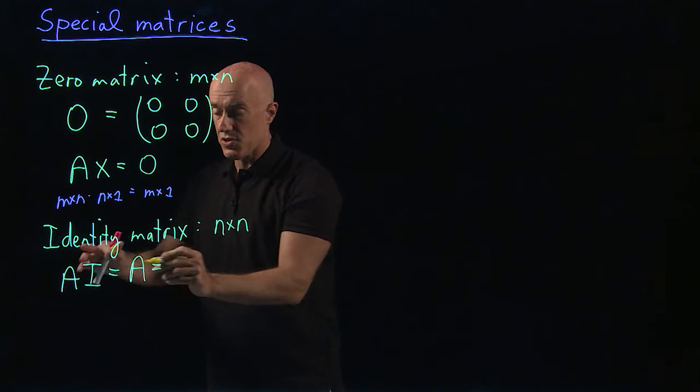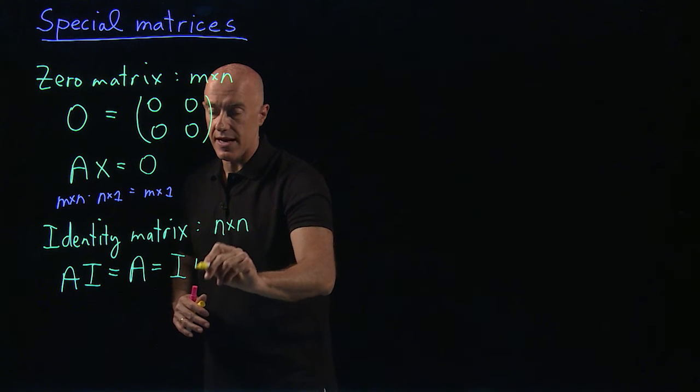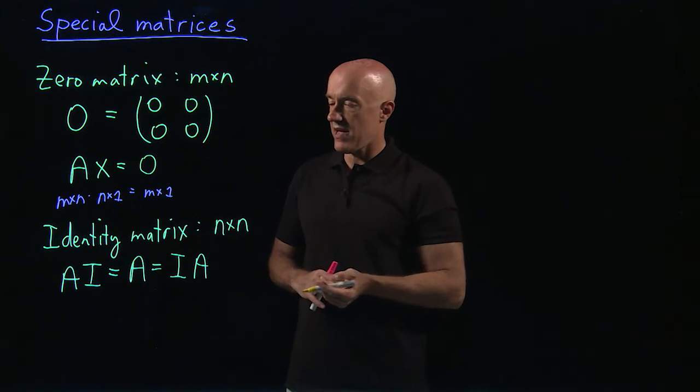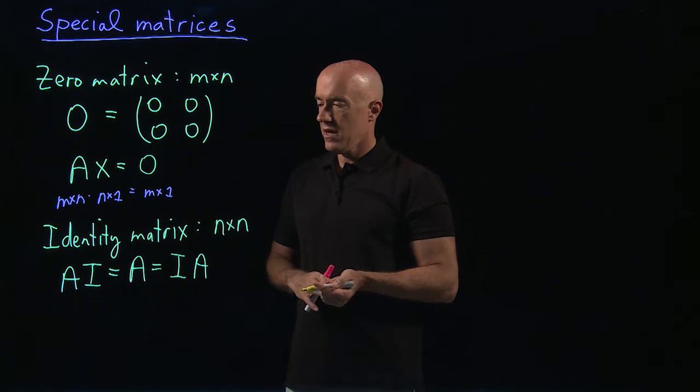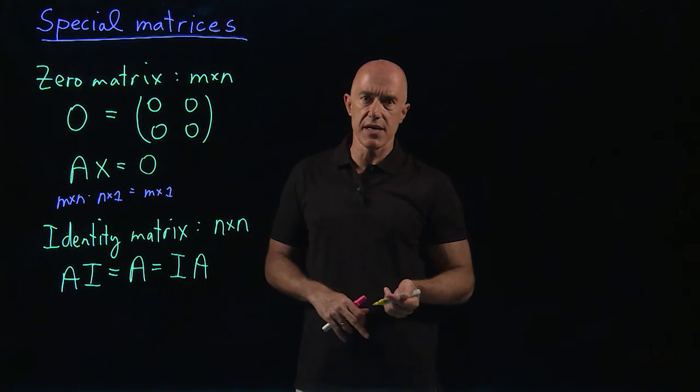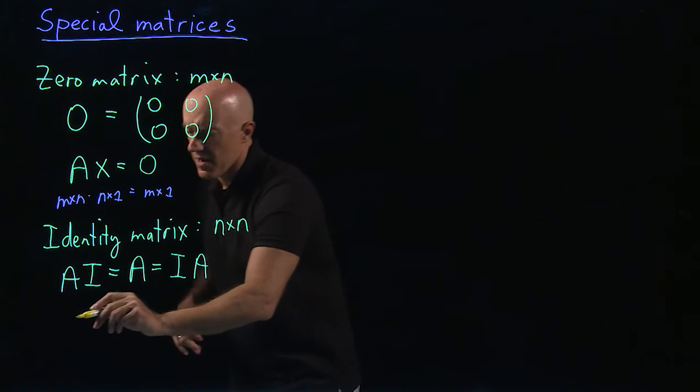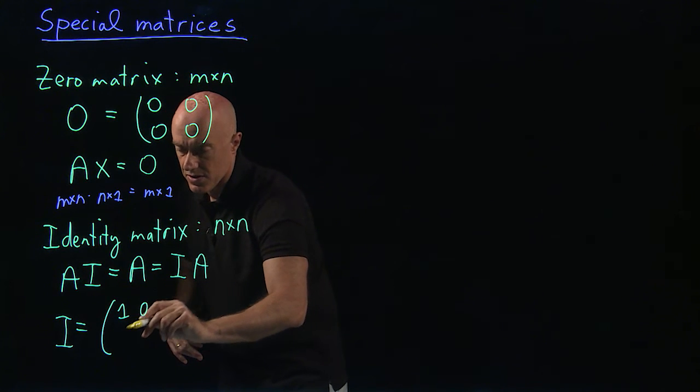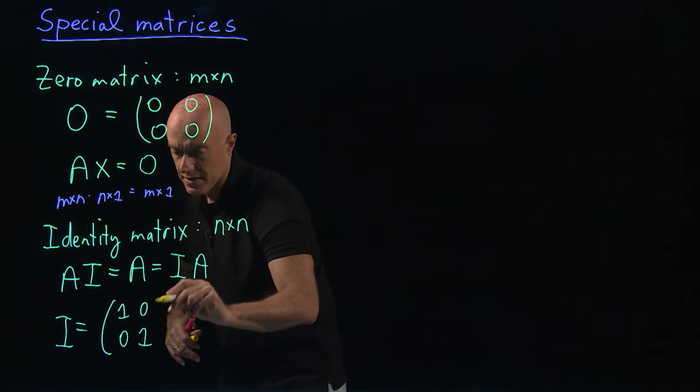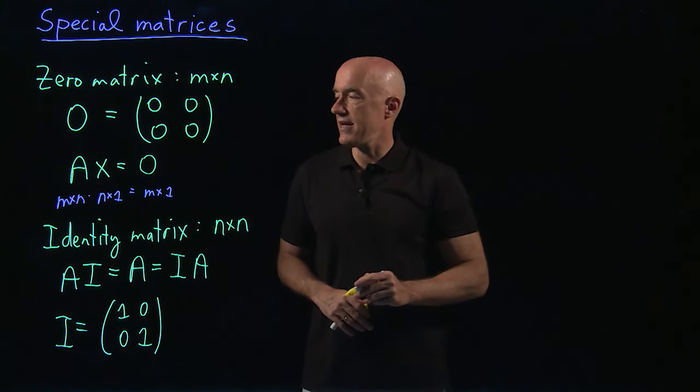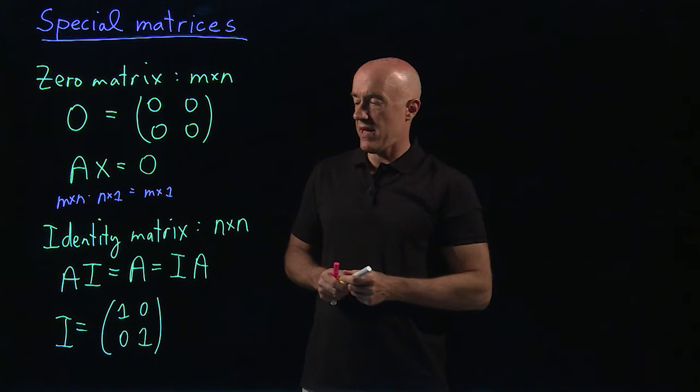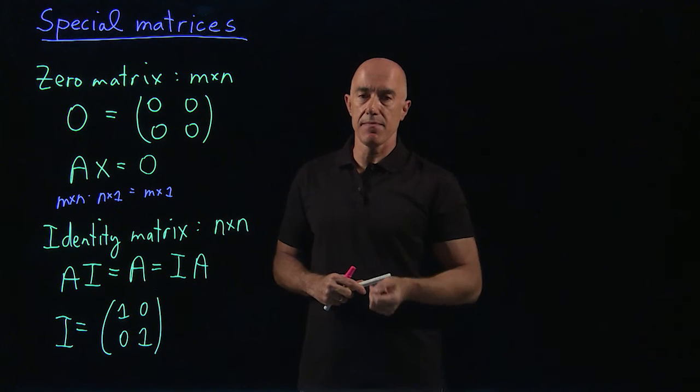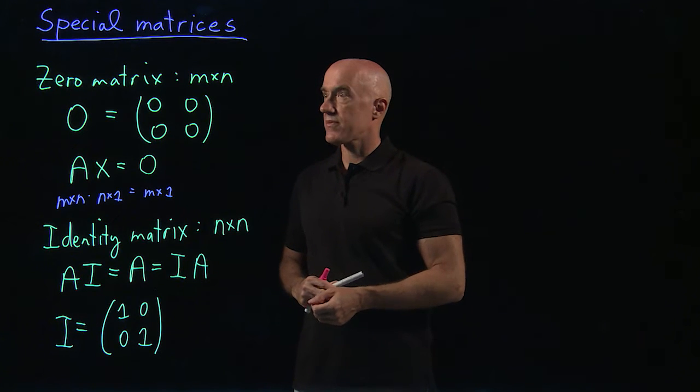And that commutes, so that's also I times A. So you're multiplying square matrices together, all of them are n by n. What type of matrix does that? For the 2 by 2 case, it will be this matrix: 1, 0, 0, 1. So you can try that out. If you multiply a 2 by 2 matrix by I, you get back the same 2 by 2 matrix.